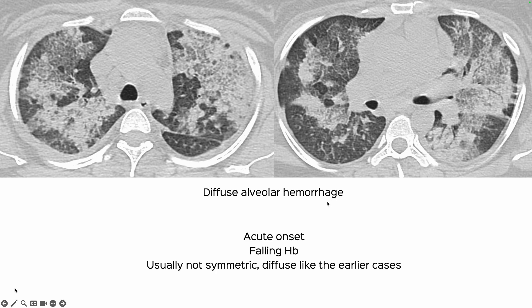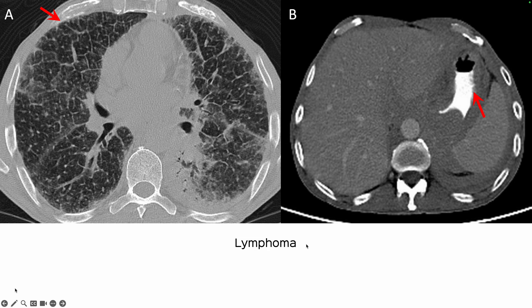This is a patient with diffuse alveolar hemorrhage. While there is crazy paving, we also see consolidation because of the blood, and there is subpleural sparing — so it's not as diffuse as the classic alveolar proteinosis appearance. Nevertheless, with acute onset and a falling hemoglobin, you would be able to make the diagnosis.